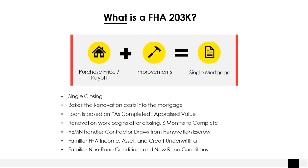These loans are similar to your traditional 203B. They have the same FHA income, asset, and credit underwriting standards as a 203B. And you're going to see your familiar non-reno FHA conditions — you already know 75% of the conditions that you'll see on a 203K. What Remen's job is to do is train you on the new renovation conditions and get you accustomed to those.